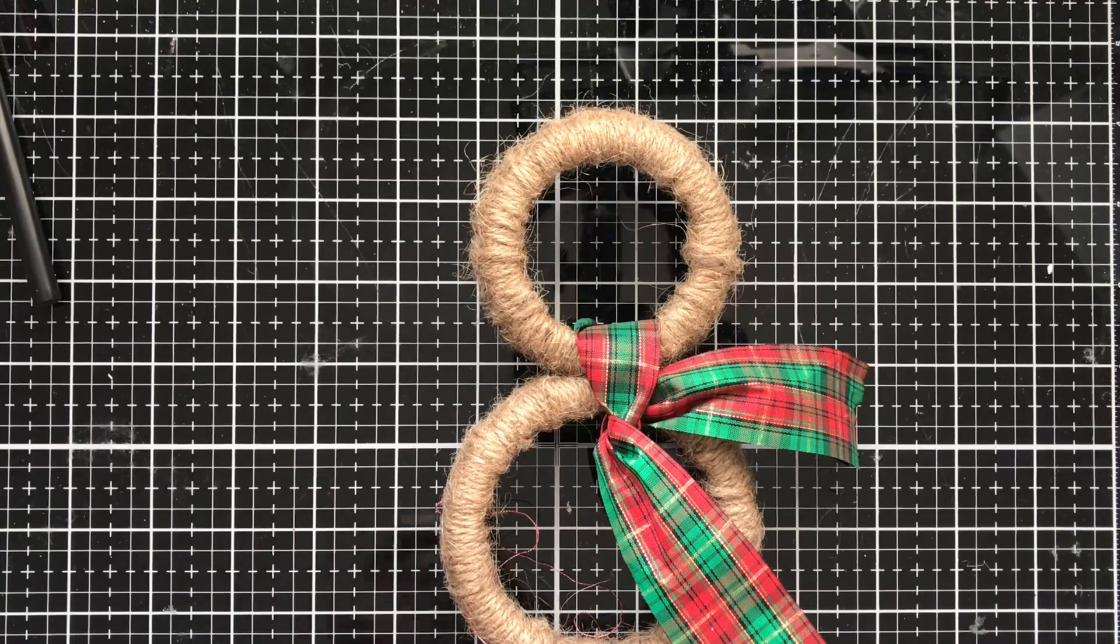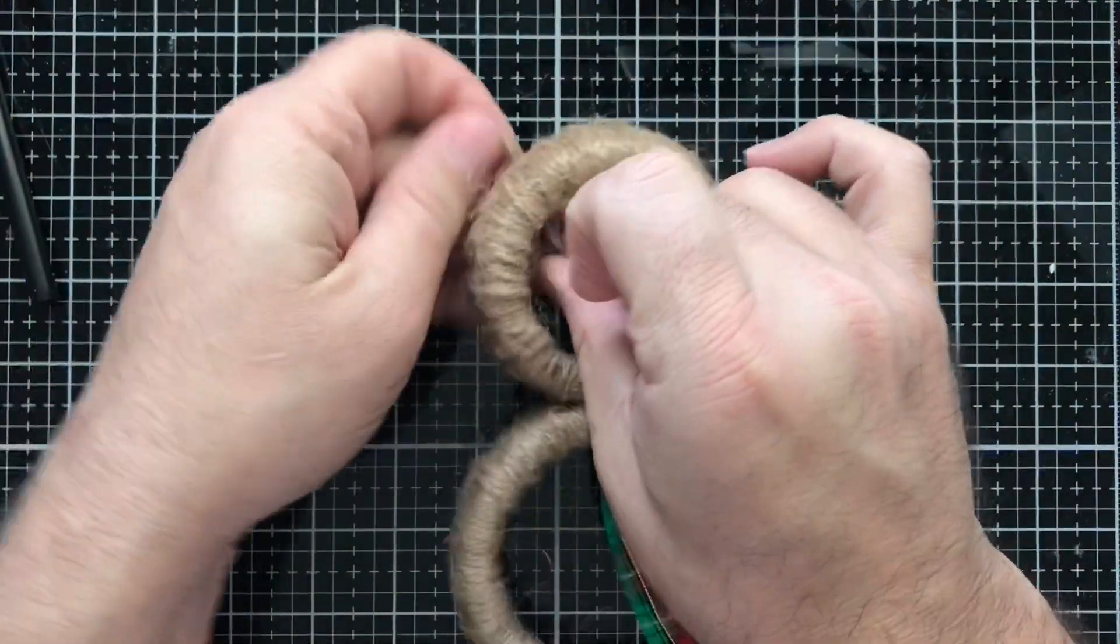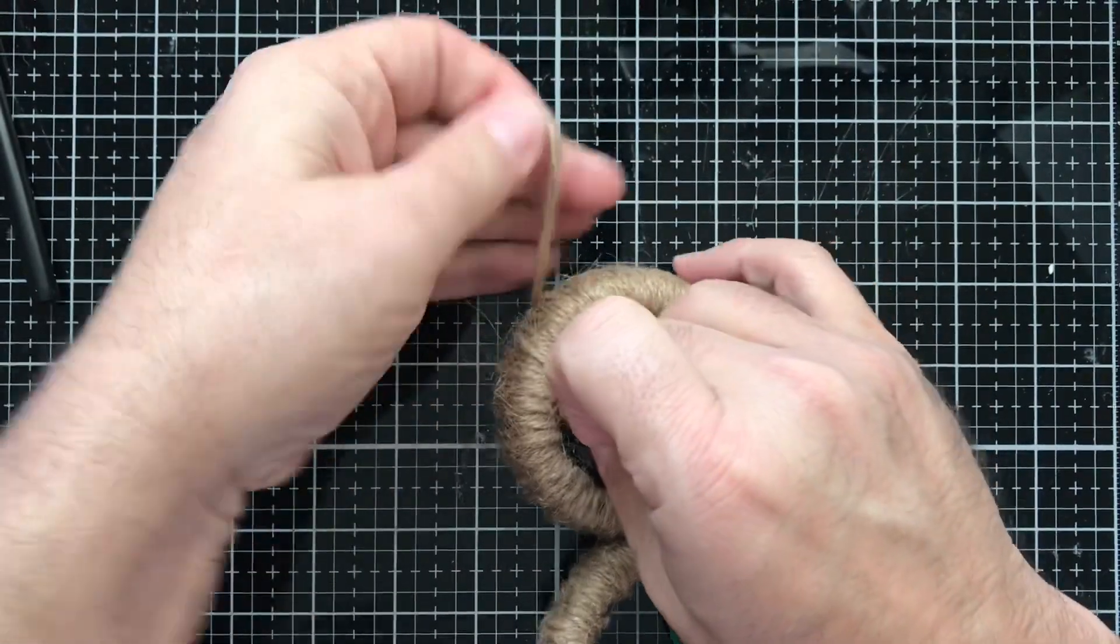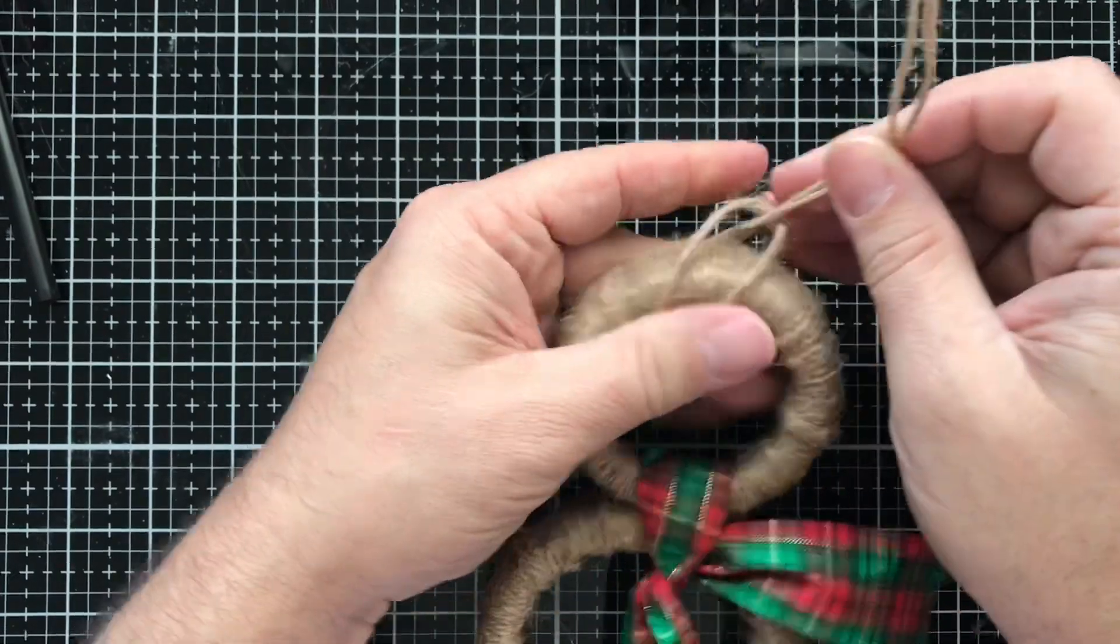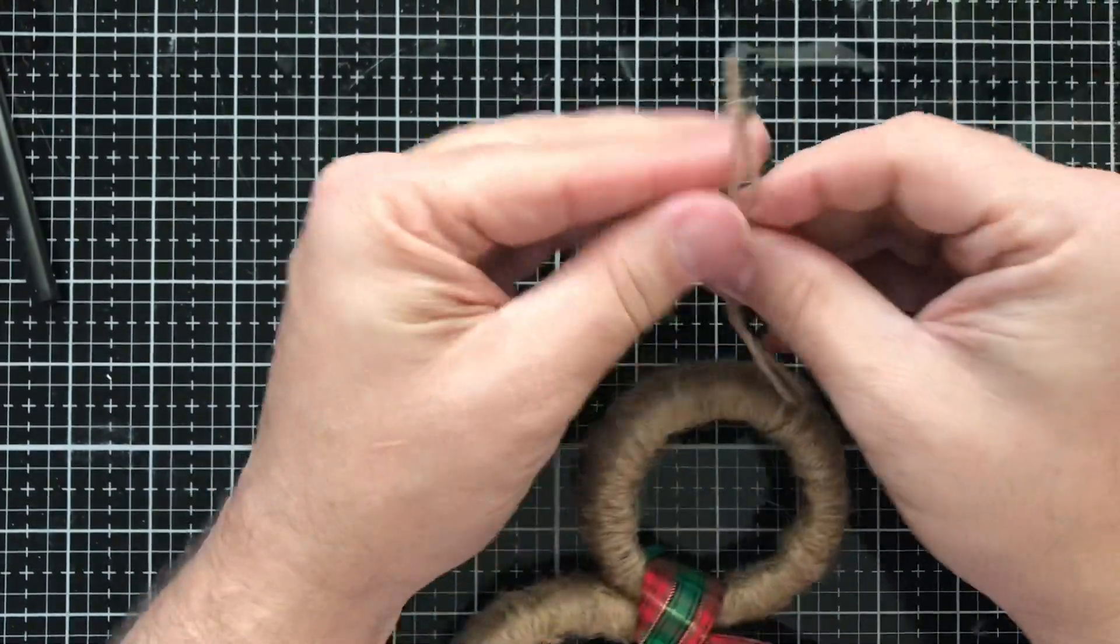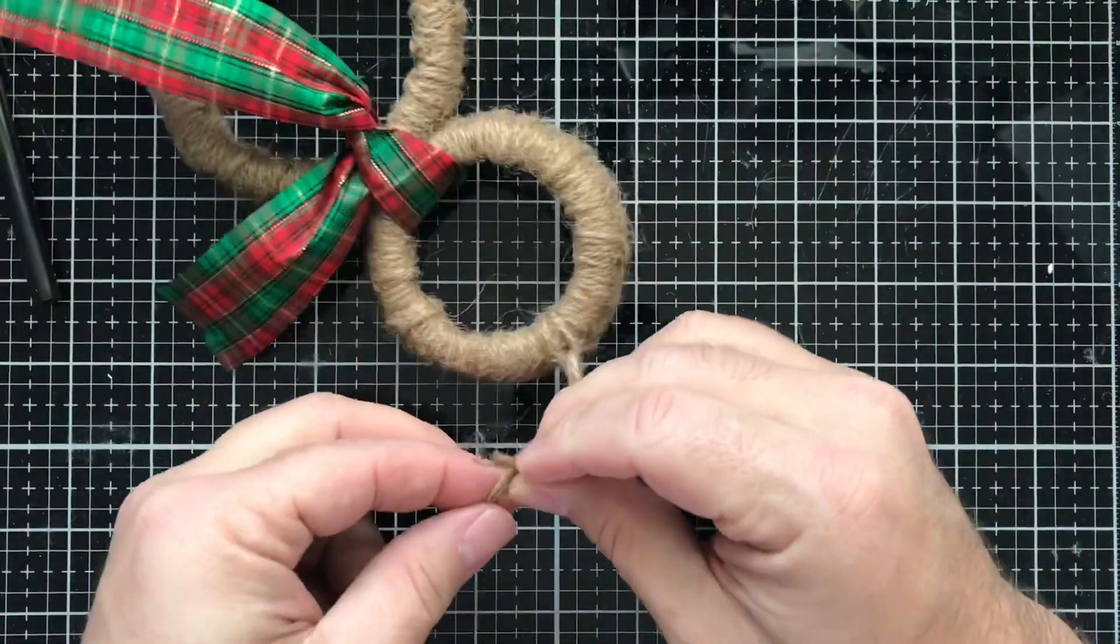And I'm going to slip knot it on the top, okay, like this - kind of like what you do with a tag. Pull it like this and then I can just do another one. We'll tie a little knot at the top and voila!